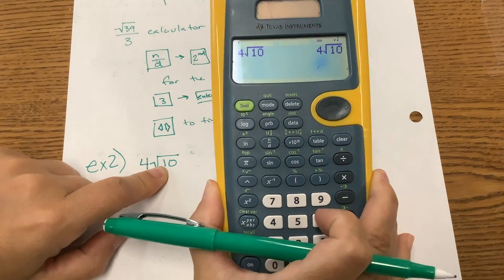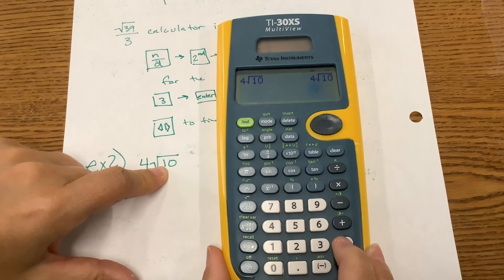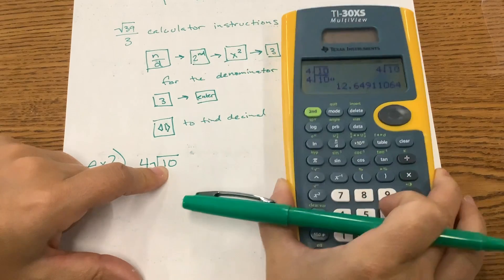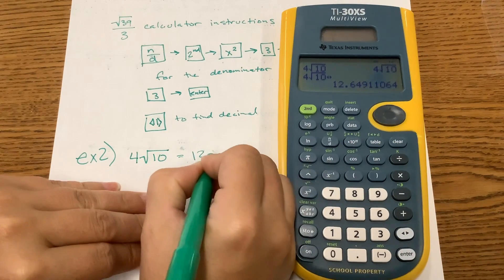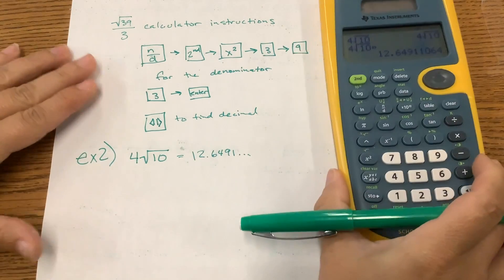It gives us the same thing back. What type of number is this? Irrational. So now let's look at the decimal. So we have a decimal. We're going to copy that down. 12.6491.